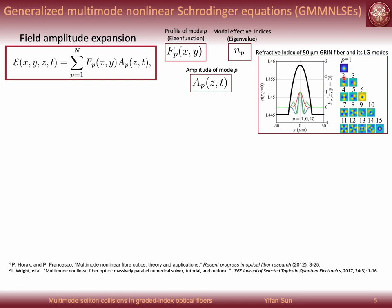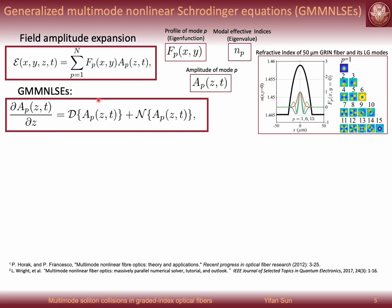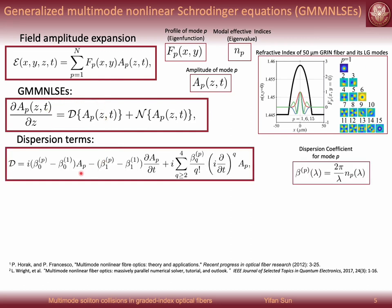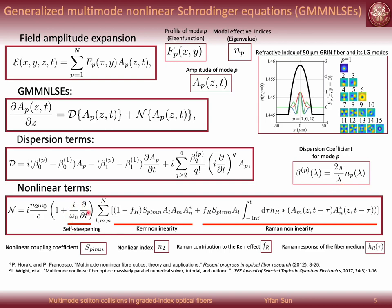And the mode amplitude Ap are governed by this coupled nonlinear Schrödinger equation. It contains two terms. The first term is dispersion term. It contains a lot of dispersion coefficients beta derived from the eigenvalue of the fiber. Another term is nonlinear term, taking into account the self-steepening Kerr and Raman effects. And it contains several coefficients. For example, the nonlinear coupling coefficients are from the integral of overlap of the eigenmodes, and other coefficients are from the fiber materials. So now we have the model, we can explore the dependence of soliton frequency shift and modes in GRIN fibers.